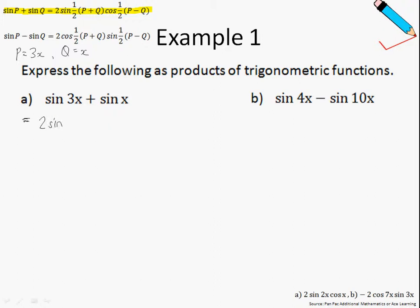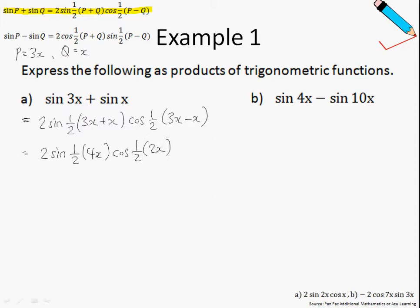Using the Factor Formula, sine 3x plus sine x can be broken down into 2 sine of half of (P plus Q), which is 3x plus x, multiplied by cosine of half of (P minus Q), which is 3x minus x. Simplifying: 2 sine of half times 4x, cosine of half of 2x, which gives us 2 sine 2x cosine x. That's the final answer.